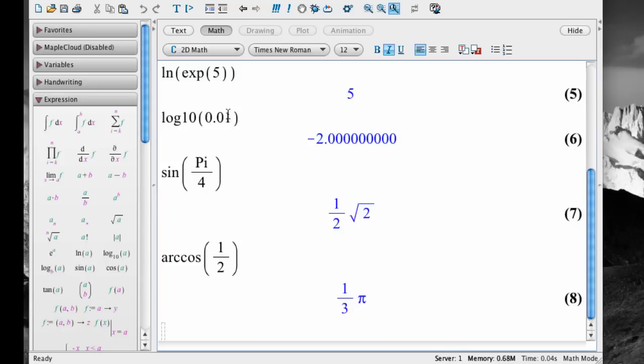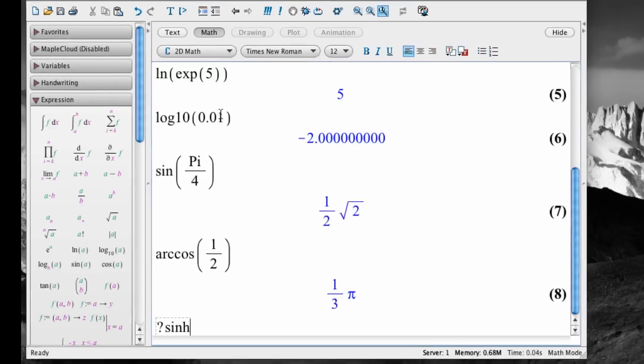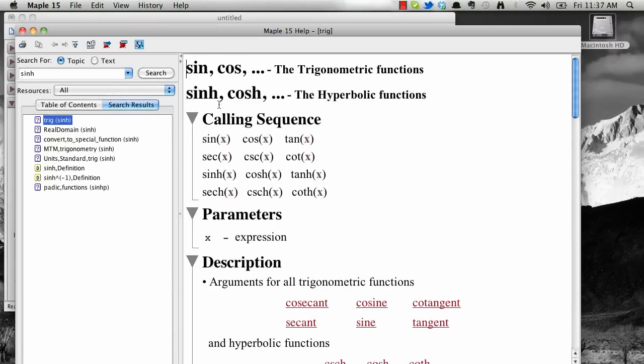Maple has many more mathematical functions built into the system. If you have one in mind that you'd like to use, or if you want help on a function that you're trying to use, go to the cursor and type a question mark followed by the thing you want help on. For example, if I wanted to find the function for hyperbolic sine, it's usually abbreviated S-I-N-H, I could type question mark S-I-N-H and hit enter. And it would bring up a help screen.